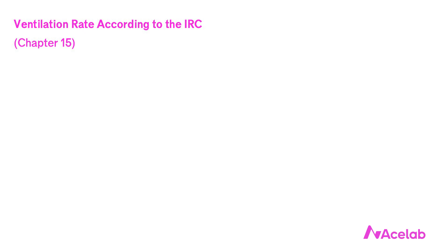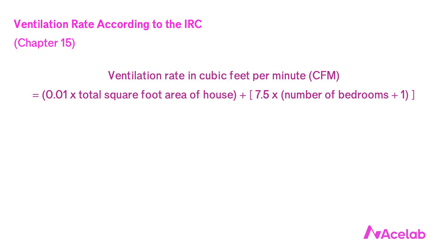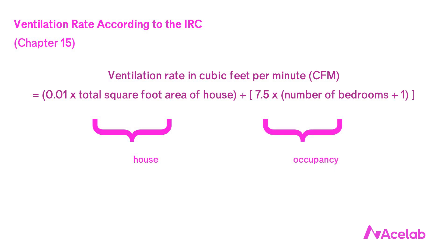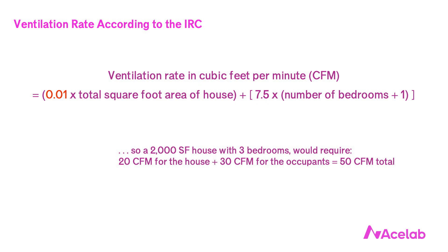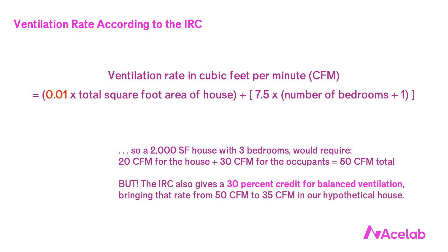The IRC, or International Residential Code, tells us to generate the recommended cubic feet per minute by multiplying the home's area in square feet by 0.01, and by multiplying the number of bedrooms plus one by 7.5. The first term is based on the house and the second on occupancy. So a 2,000 square foot house with three bedrooms would require 20 CFM for the house plus 30 CFM for the occupants, totaling 50 CFM. The IRC also provides a 30% credit for using balanced ventilation rather than exhaust-only, reducing the rate in our hypothetical home from 50 CFM to 35 CFM.